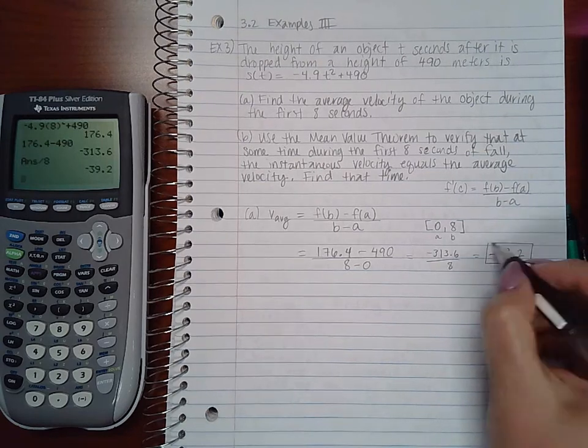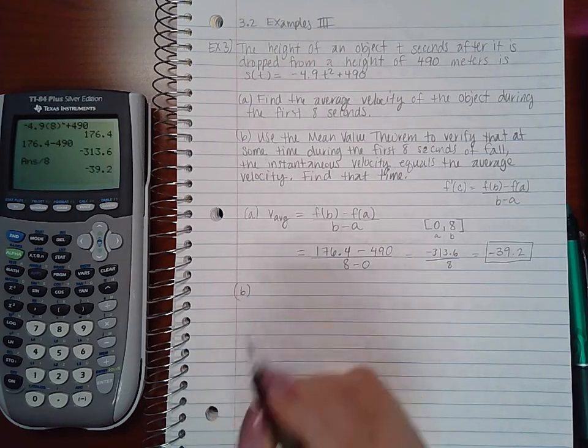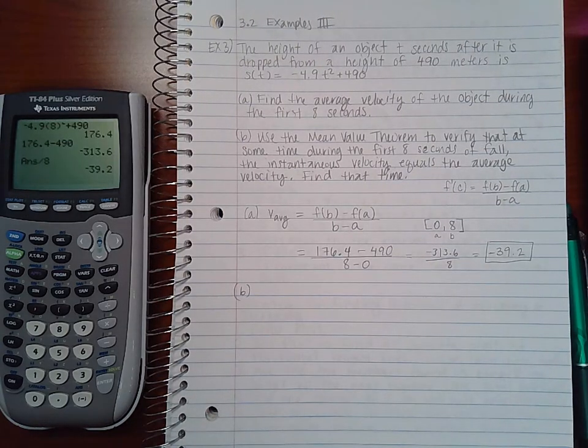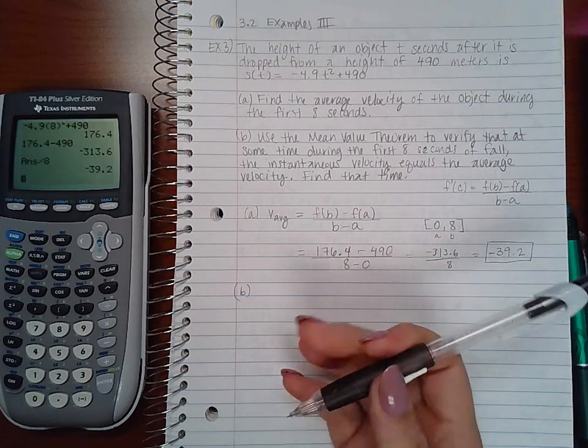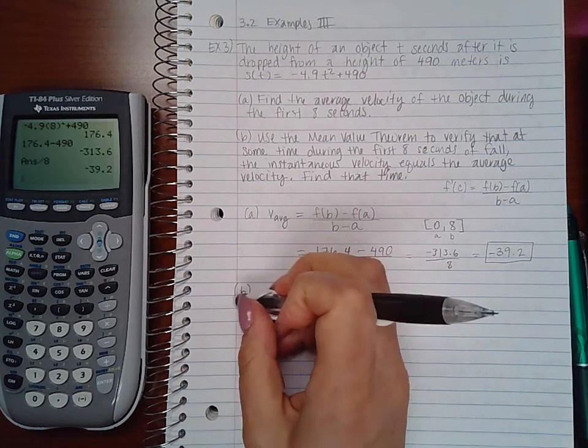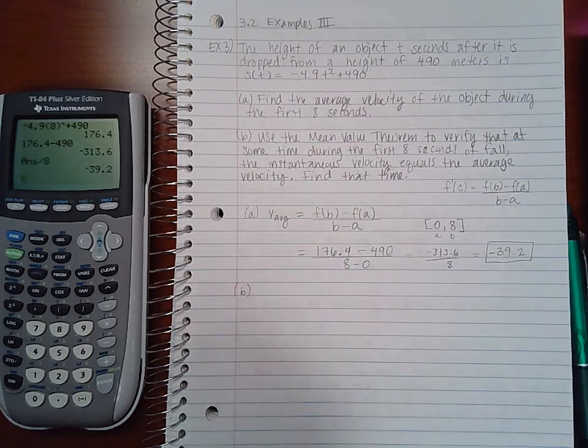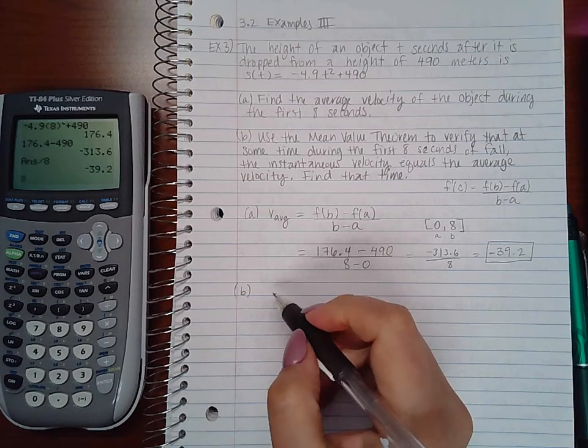Now if I want to do part (b), that says use the mean value theorem to verify, and then it wants me to find that time.